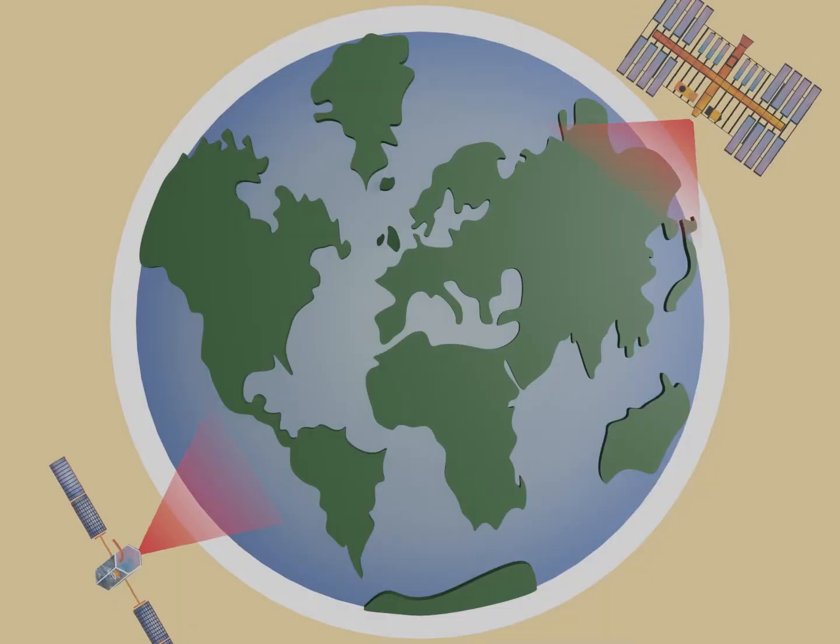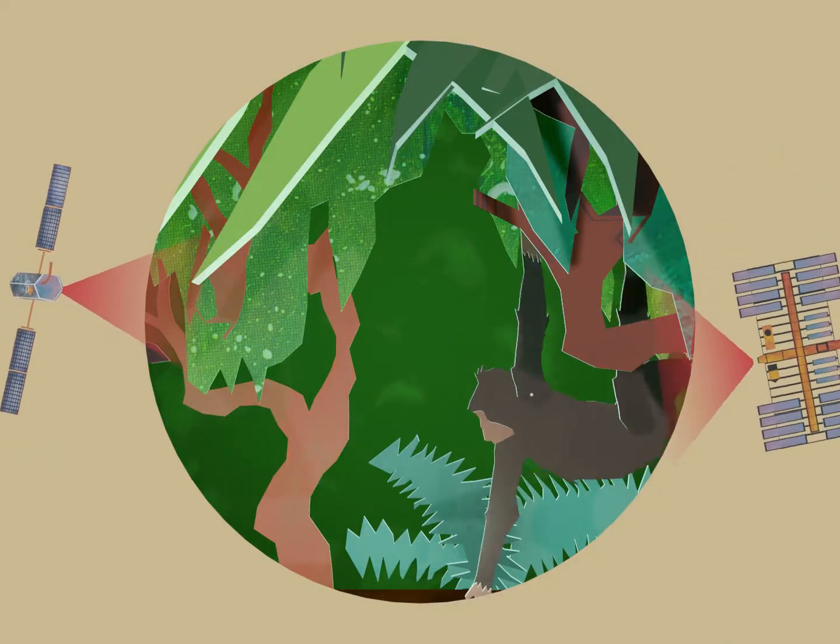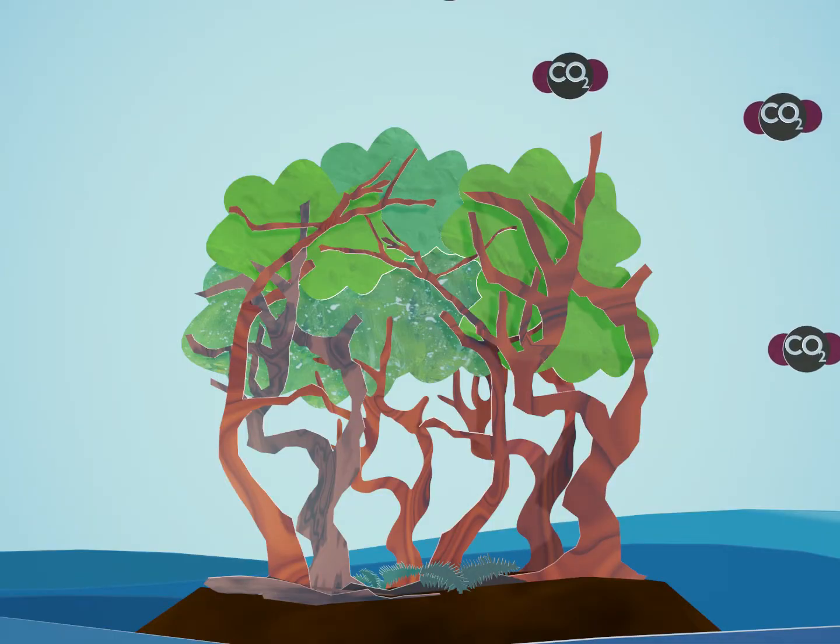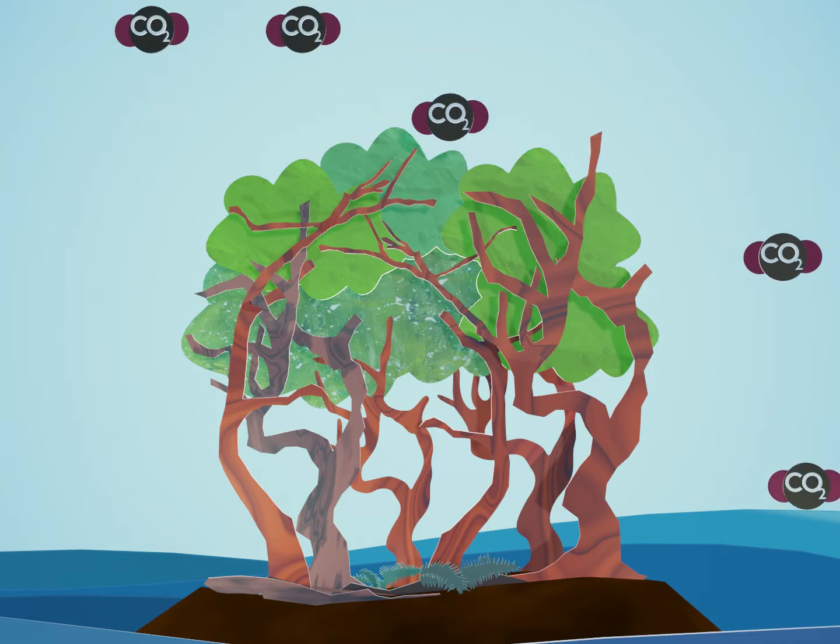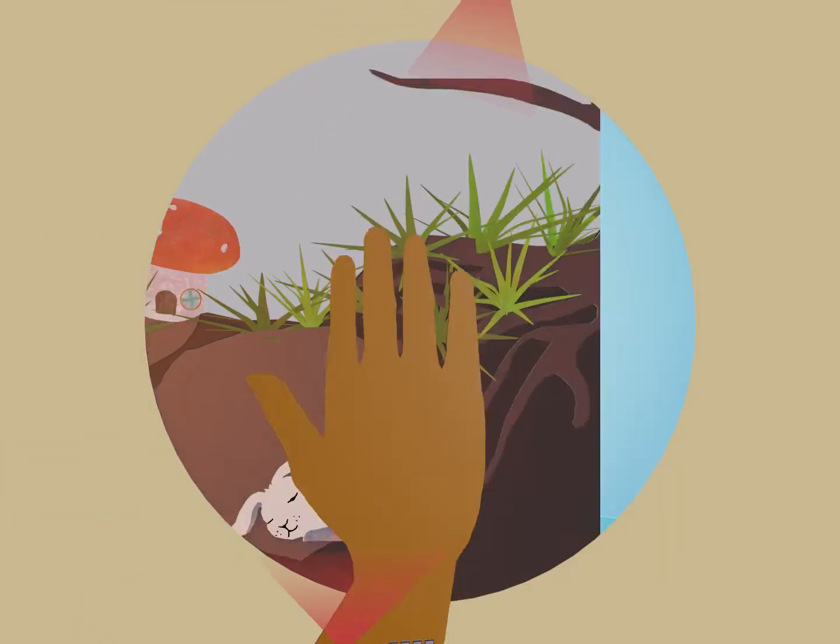That's where trees come in. Forests reduce the amount of carbon dioxide in the air. When something takes carbon away from the air, it's called a sink. And it's not just trees. Earth has many sinks: the soil, grasslands, and even the ocean.